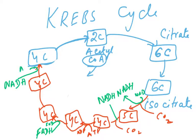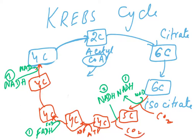Just before oxaloacetate is regenerated, another NADH is formed. So in one Krebs cycle we have NADH formed three times and FADH once, and carbon dioxide twice. That means in one Krebs cycle: two CO₂, three NADH, and one FADH — and you multiply the whole thing by two for two pyruvates.